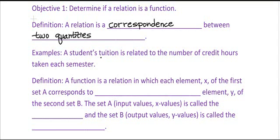Here's an example. A student's tuition is related to the number of credit hours taken each semester. And so, you can think of a correspondence there, and the way we typically relate that correspondence mathematically is through ordered pairs.